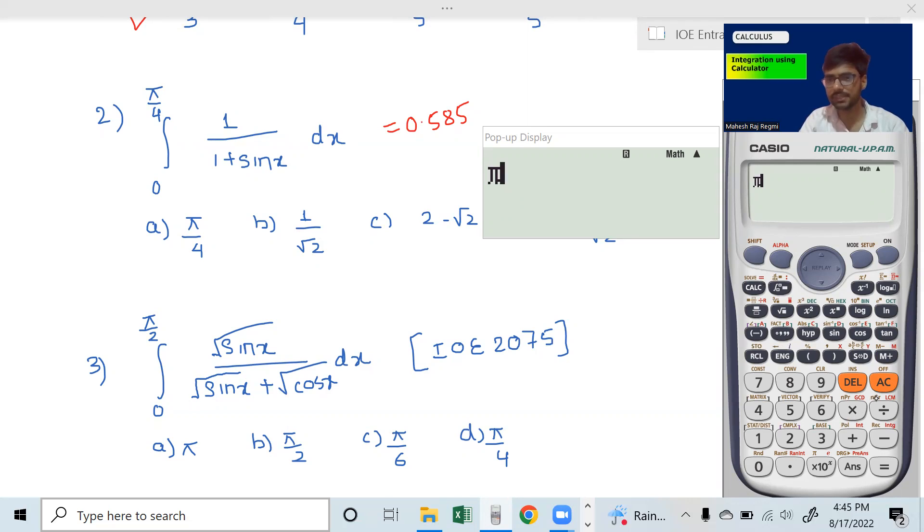One divided by root under. Answer is pi divided by 4, which gives 0.785.